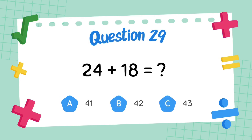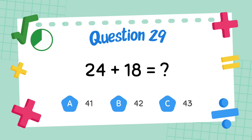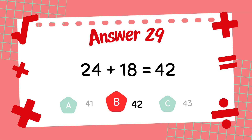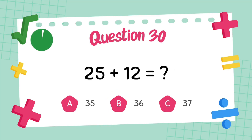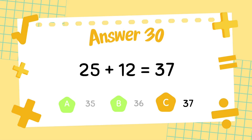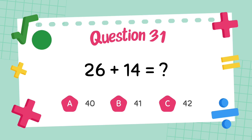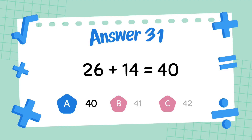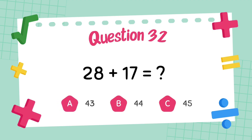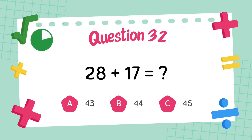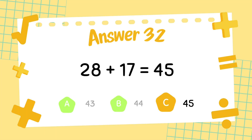What is 24 plus 18? The answer is 42. What is 25 plus 12? The answer is 37. What is 26 plus 14? What is 28 plus 17? The answer is 40. What is 28 plus 17? The answer is 45.